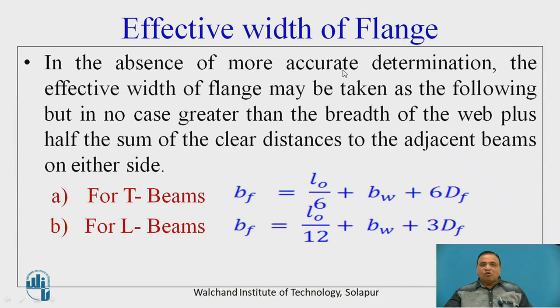In the absence of more accurate determination, the effective width of the flange may be taken as the following, but in no case greater than breadth of the web plus half the sum of clear distance to the adjacent beams on either side. For T-beam, Bf equals L0 by 6 plus Bw plus 6Df. For L-beam, Bf equals L0 by 12 plus Bw plus 3Df.